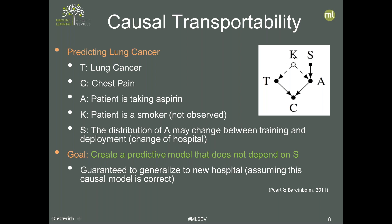One thing we don't know about these patients is whether they're smokers — that's K. Being a smoker might influence both getting lung cancer and taking aspirin. The variable S here is called a selection variable. Suppose we have training data from one hospital and fit our machine learning model to that data, but want to apply the same model at other hospitals. In some hospitals physicians like to prescribe aspirin; in others they do not. So the probability distribution of variable A may shift as we go from one hospital to another — that's what S indicates.